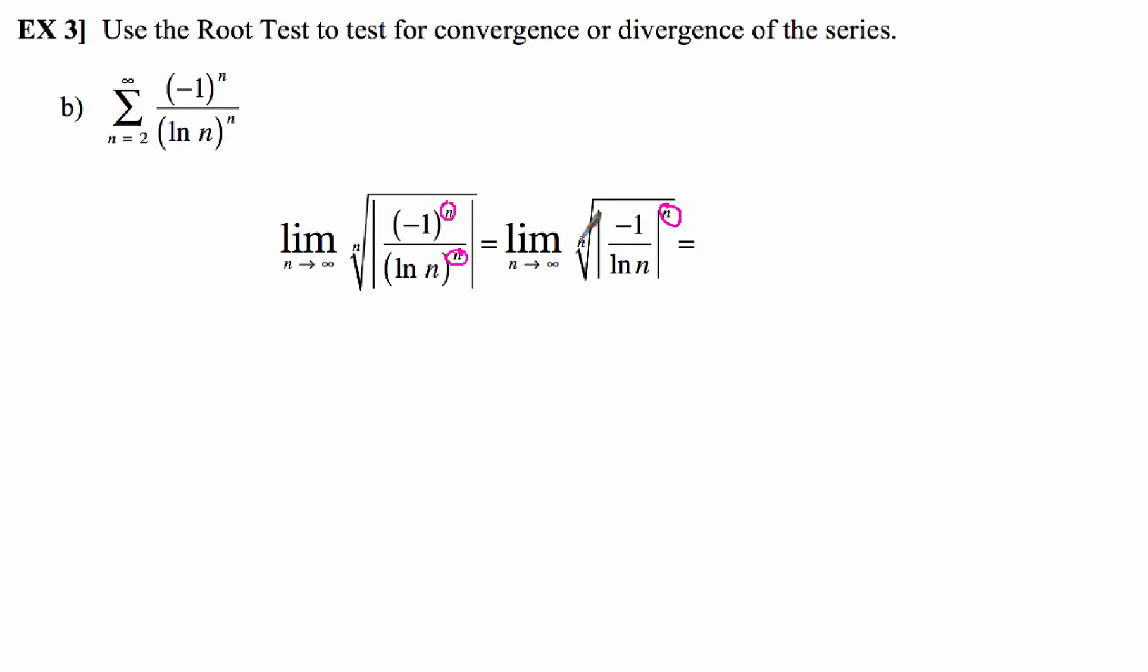Now you take away the nth power because you're taking the nth root of it, so those guys again, they will cancel out very nicely. When we take the absolute value of negative 1, that of course is just going to be 1 over natural log of n.